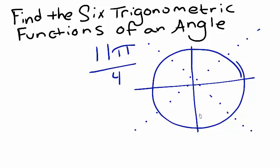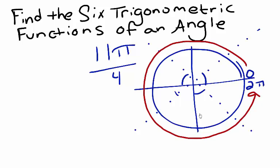Each of these dotted lines represents an angle which is a multiple of pi over 4, between 0 and 2 pi. If we consider each quadrant of the unit circle and look at the multiple of pi over 4 for each one, we can come up with the coordinate points for each angle. For example, in quadrant 1, the coordinate points are square root 2 over 2, square root 2 over 2.